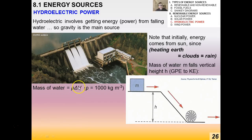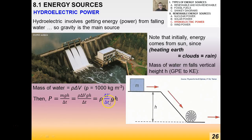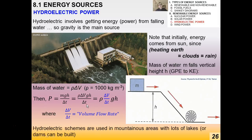Power equals energy over time — gravitational potential energy mgh divided by Δt. Substituting ρΔV for mass, the power generated by falling water is: P = ρ(ΔV/Δt)gh, where ΔV/Δt is the volume flow rate. The rate at which mass is flowing or falling is absolutely critical for hydroelectric power. Hydroelectric schemes are used in mountainous areas with lots of lakes, or where dams can be built.